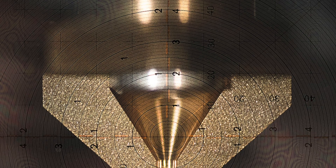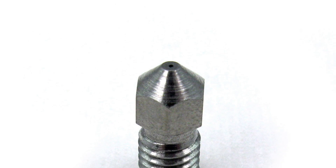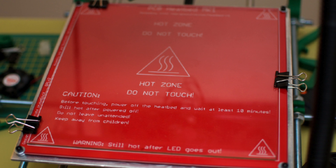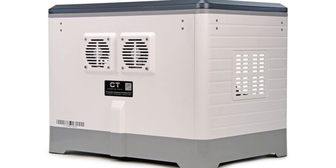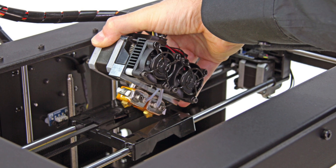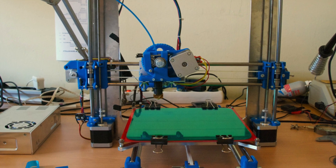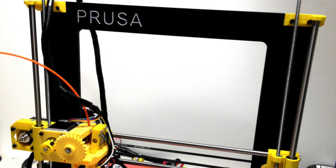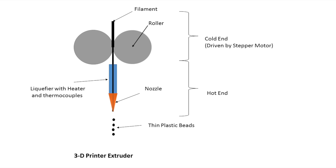Hardened steel and ruby nozzles don't wear as fast as brass nozzles, so if you're using abrasive filaments like carbon fiber, consider a hardened nozzle. Heated bed printers can print many more materials than non-heated beds — PLA is usually the only material non-heated bed printers can handle. Printers with enclosures can print materials like HIPS and ABS better than open-frame printers. Dual extruder printers can print with two materials — some have one nozzle where material is swapped, while others have two separate nozzles each fed by different filaments.